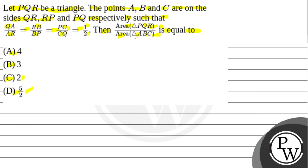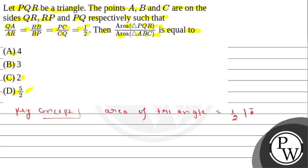So here we will find the ratio of area of triangle PQR upon area of triangle ABC. We will use the formula for area of triangle: area = 1/2 into magnitude of vector AB cross vector AC.